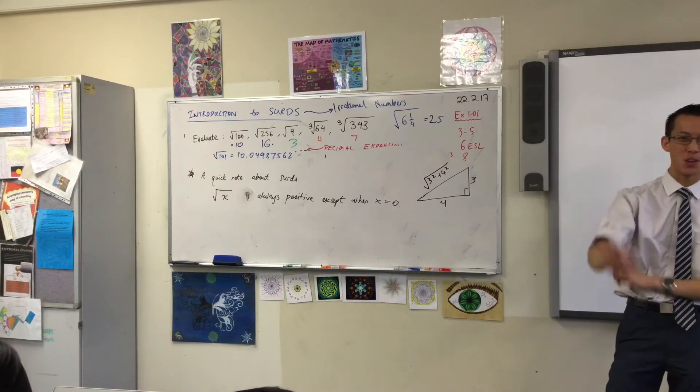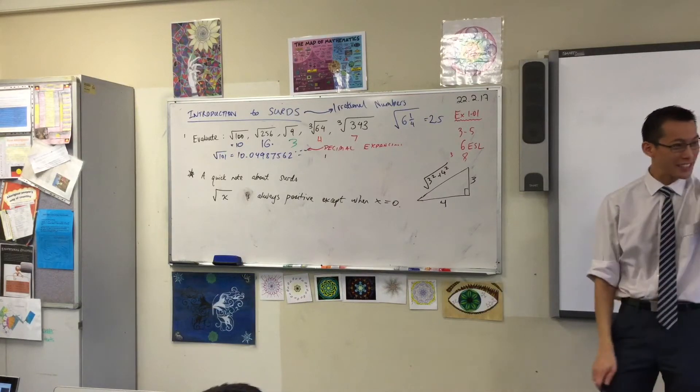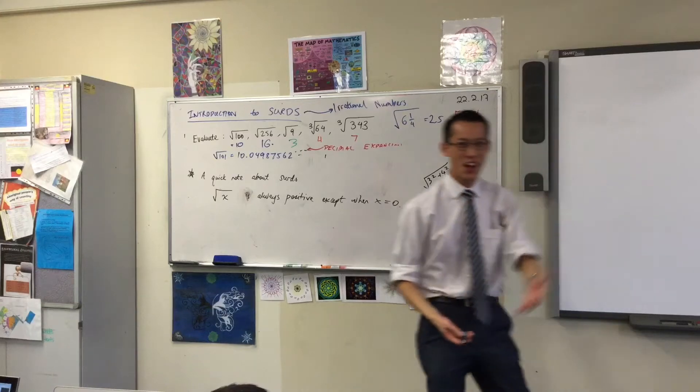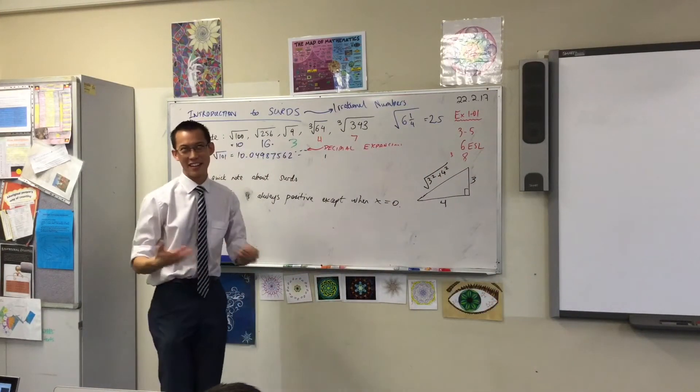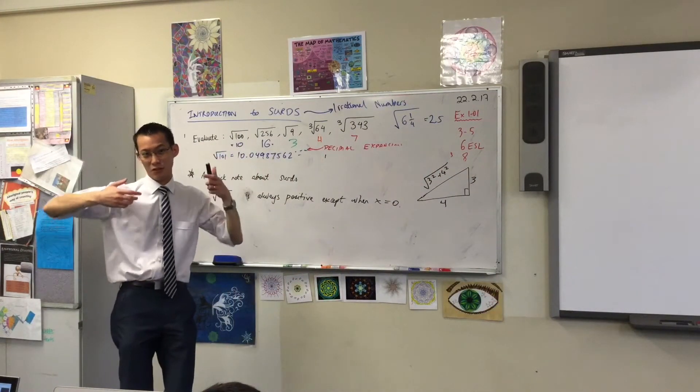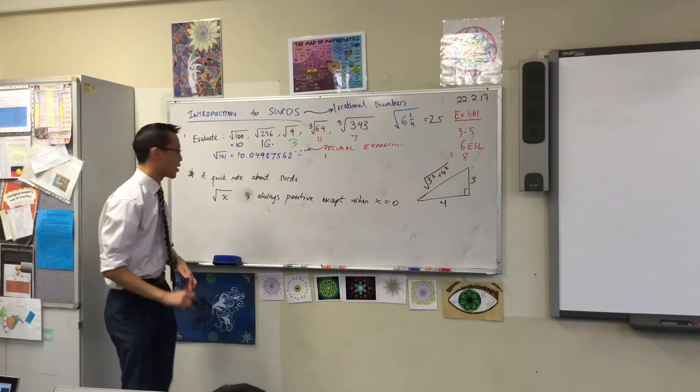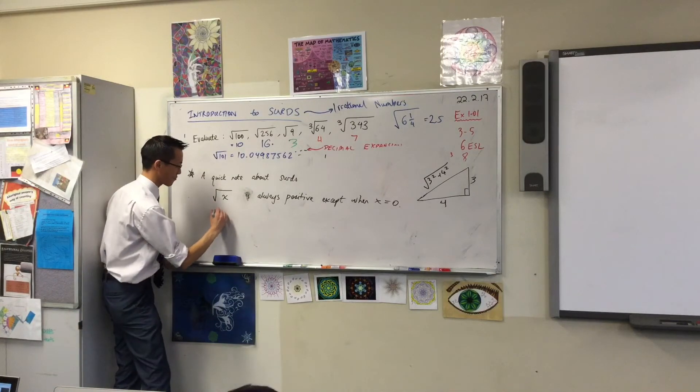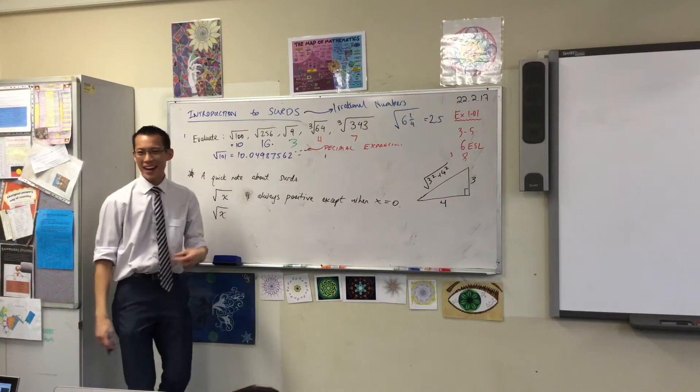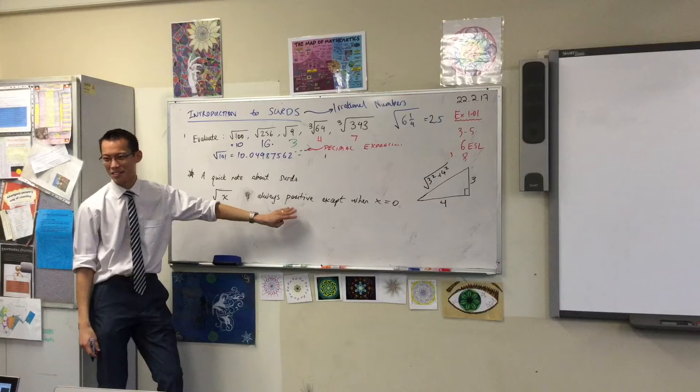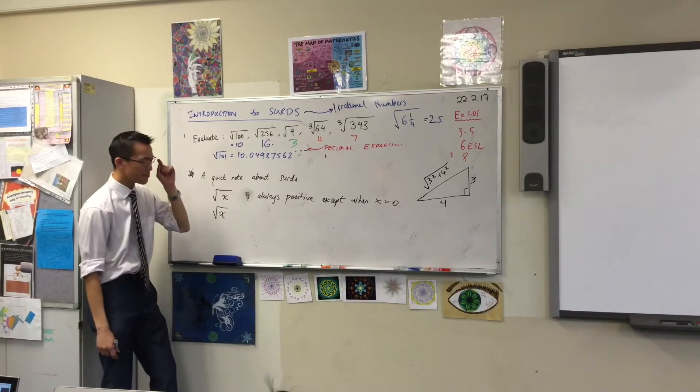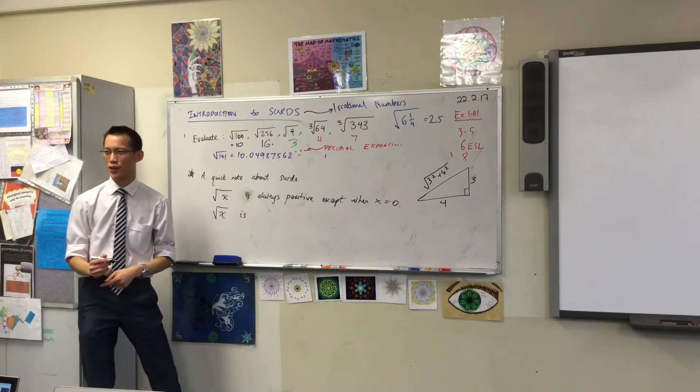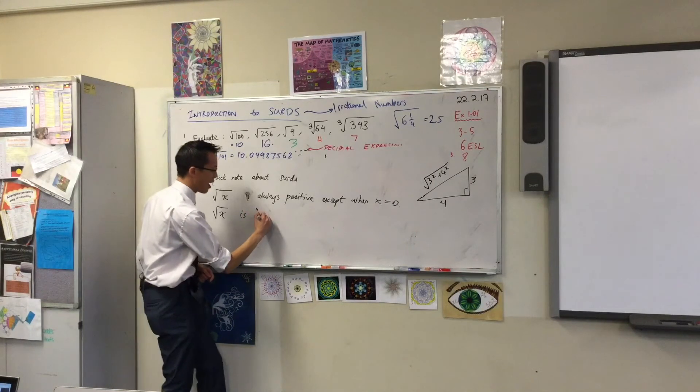Now the inquisitive and quick among you will go straight to your calculator, and your calculator will faithfully tell you syntax error or math error, right? Which is a calculator's way of saying no. So I actually want to tell you more than the calculator. So underneath where you talked about it being positive, right, I want you to write down that the square root of X is—and put this in inverted commas for me—is undefined when X is negative.